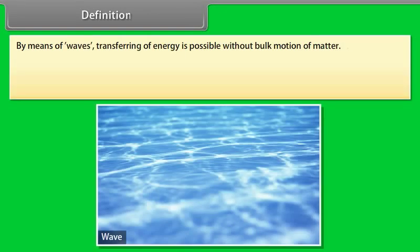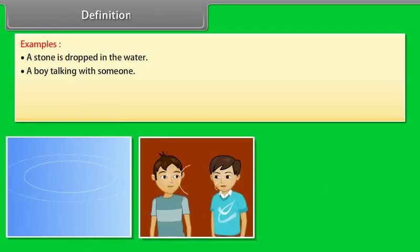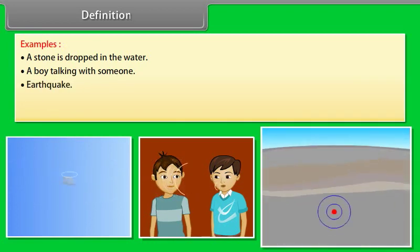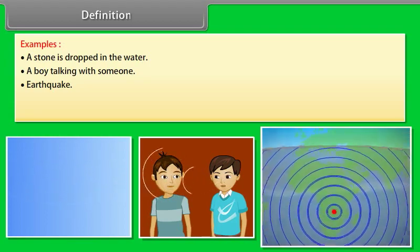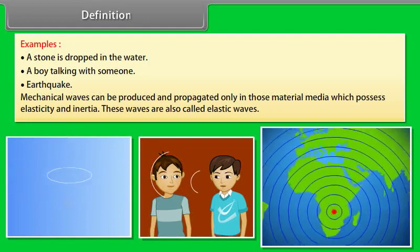By means of waves, transferring of energy is possible without bulk motion of matter. Wave motion may be defined as a form of disturbance which is due to the repeated periodic vibrations of the particles of the medium about their mean positions, and the motion is handed over from one particle to the other without any net transport of the medium. A stone dropped in water, a boy talking with someone, and earthquakes are some examples of wave motion. In this chapter, we shall study mechanical wave motion. Mechanical waves can be produced and propagated only in material media which possess elasticity and inertia. These waves are also called elastic waves.